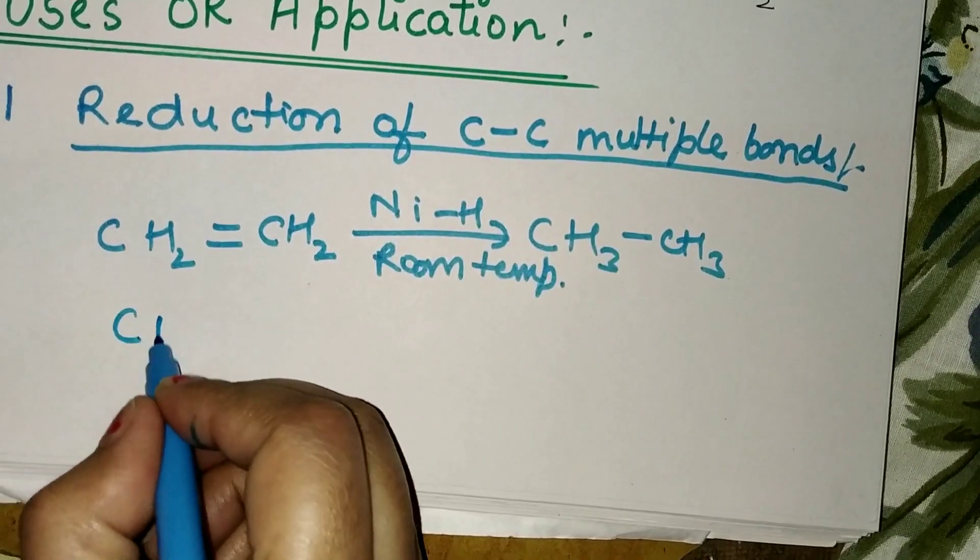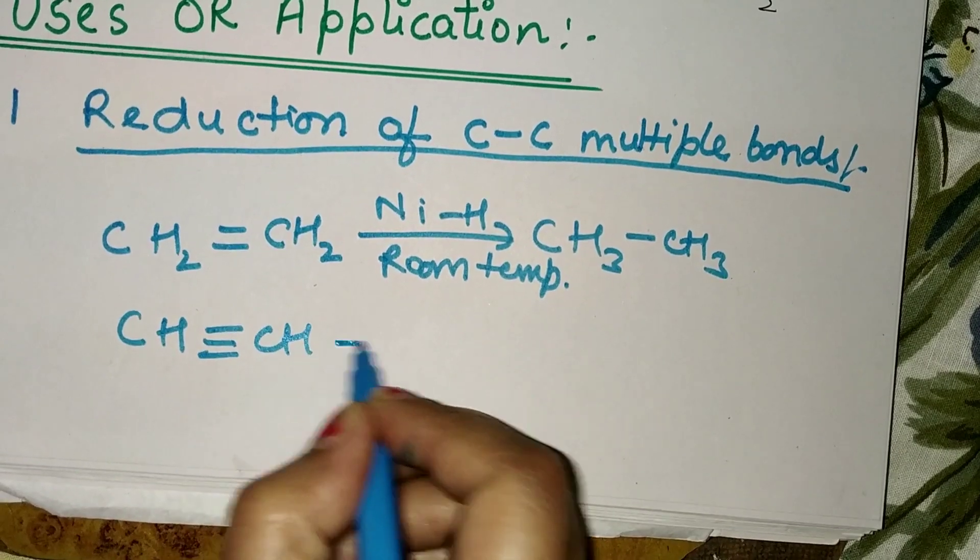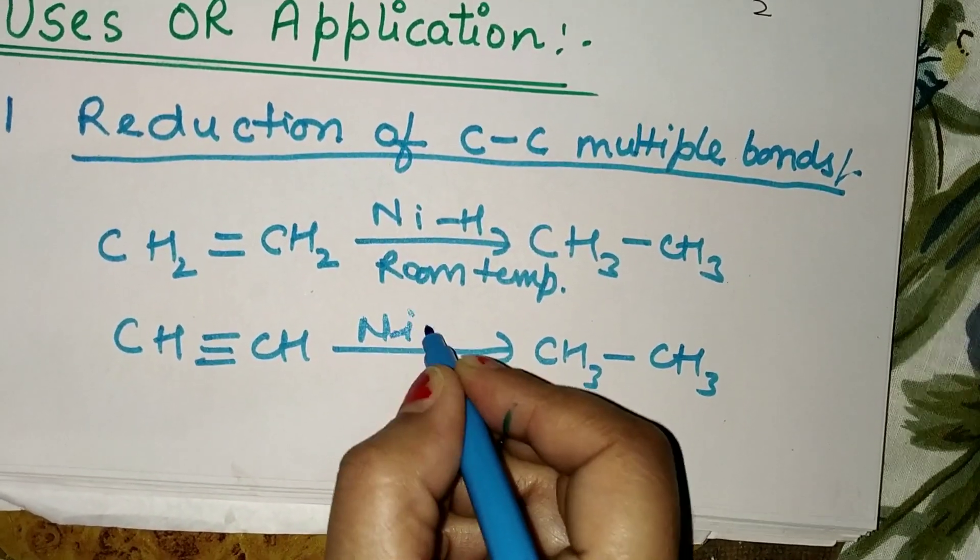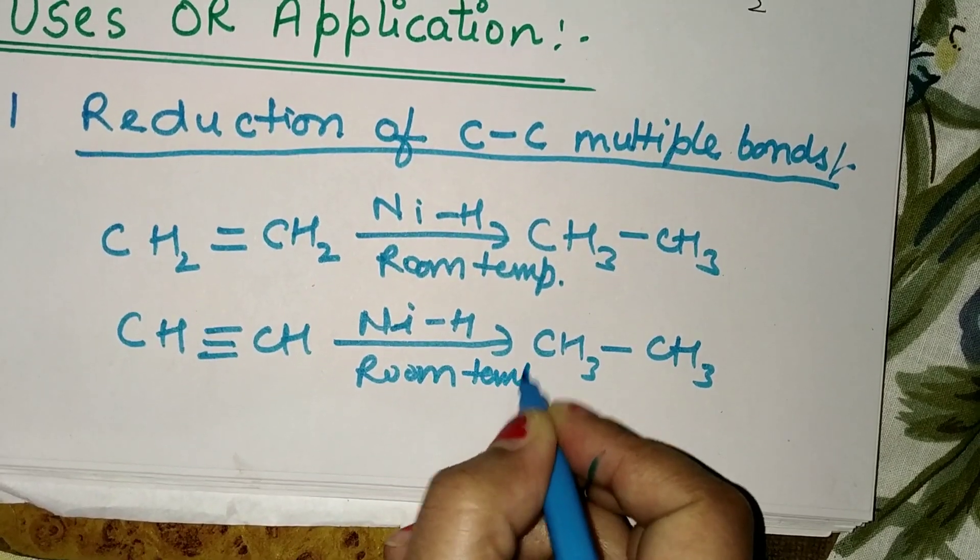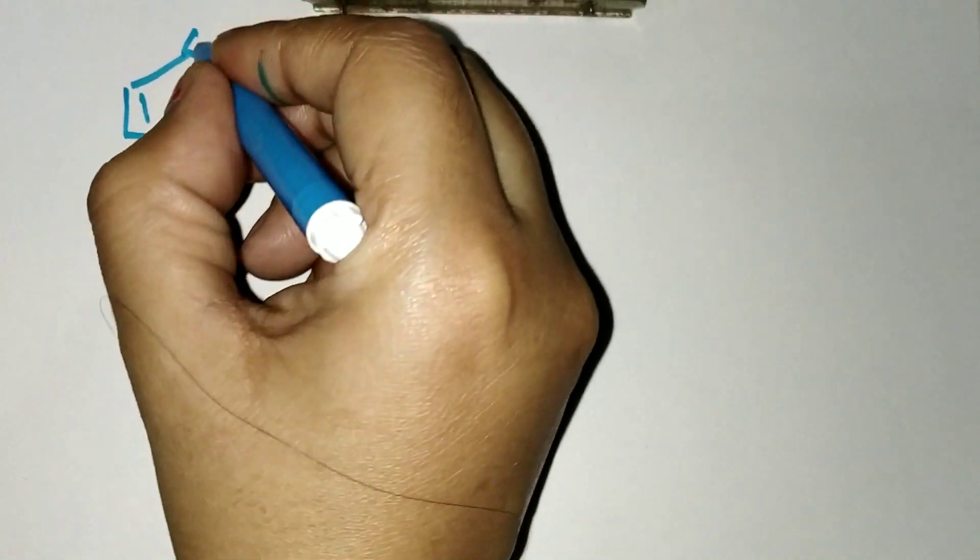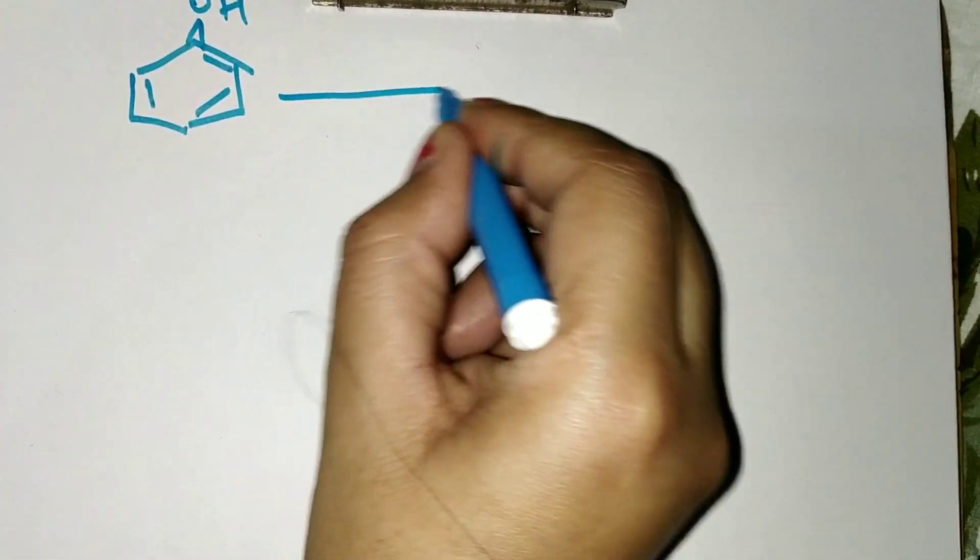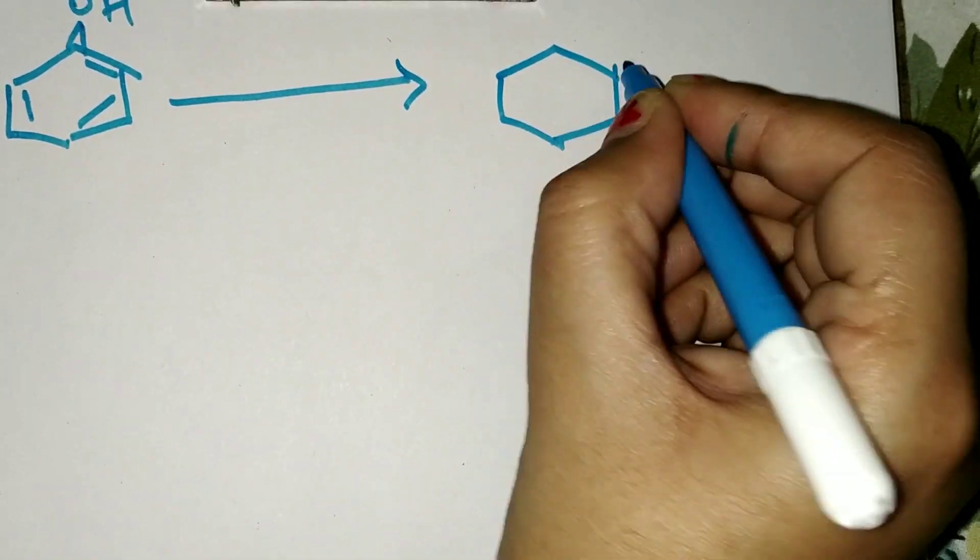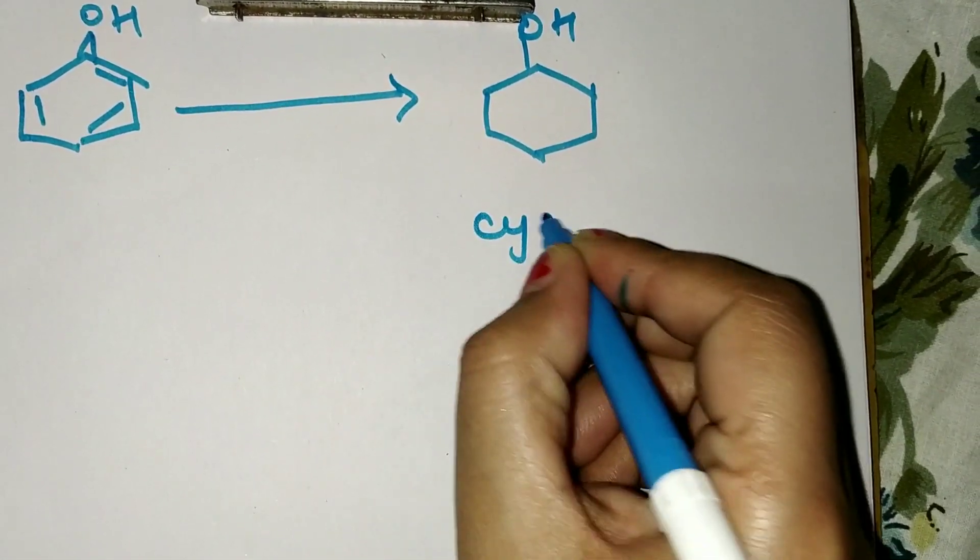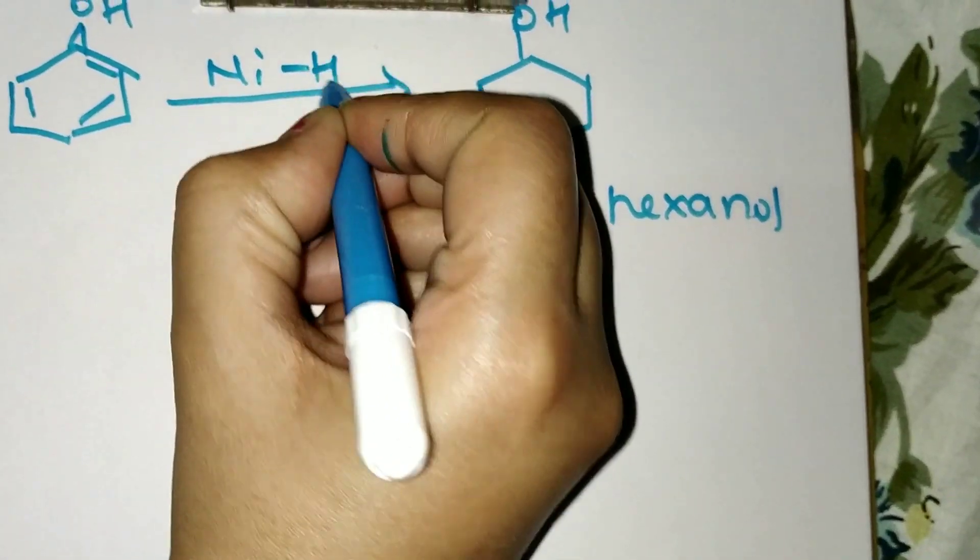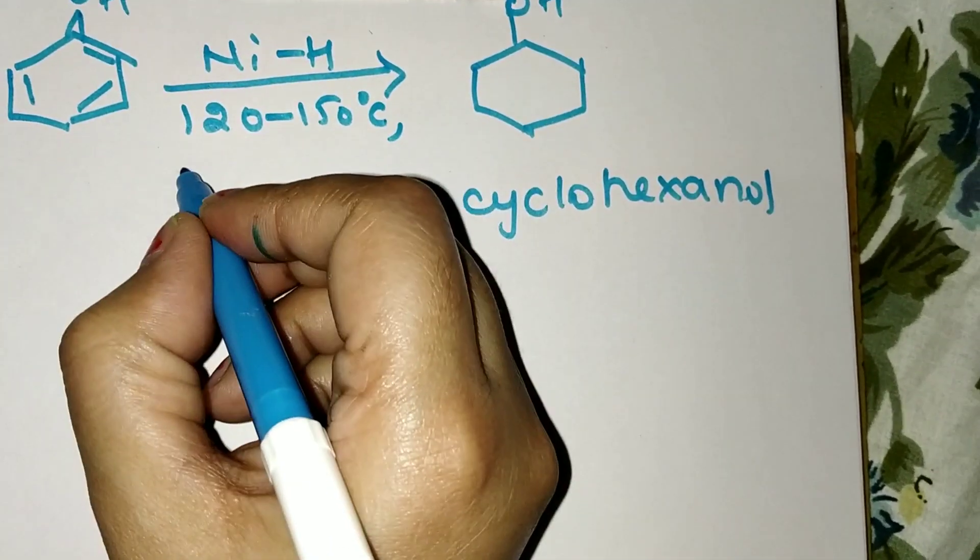Ethene also changes into ethane in the presence of Raney nickel at room temperature. Next, phenol also changes into cyclohexanol in the presence of Raney nickel at 120 to 150 degrees Celsius under pressure.